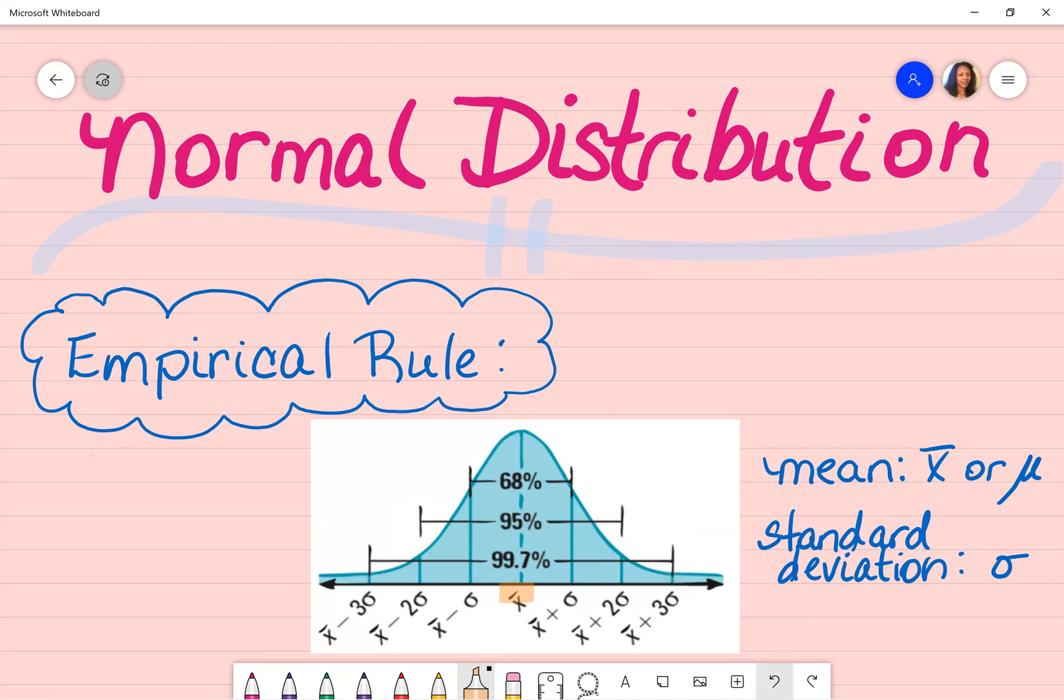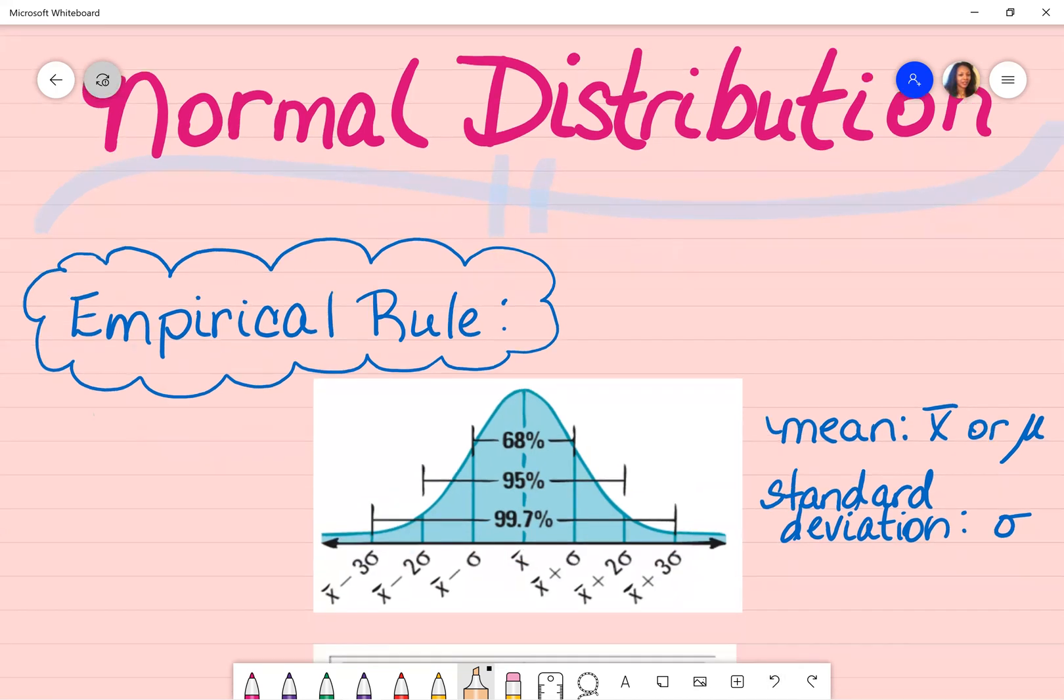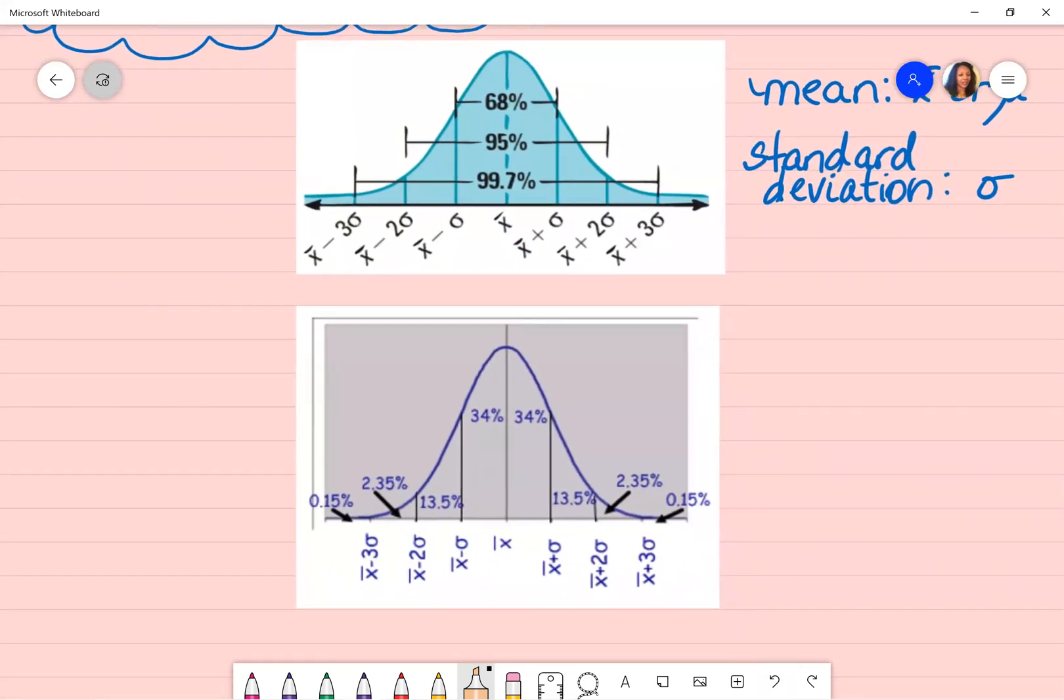You may ask yourself, where's the other 0.3% that makes up 100%? You can see that better if you're looking at the visual representation that's shown here, and that's because it shows the percentages broken out. So on one side, it's 0.15%. And on the other side, it is as well. So if I add that together, that's 0.3%, which makes up that 100% of my data.